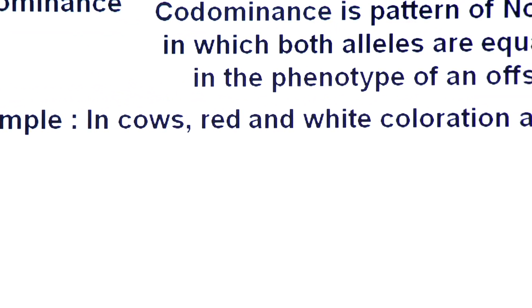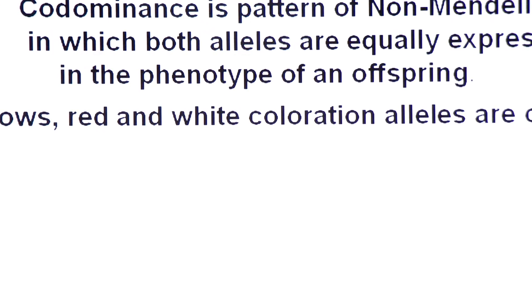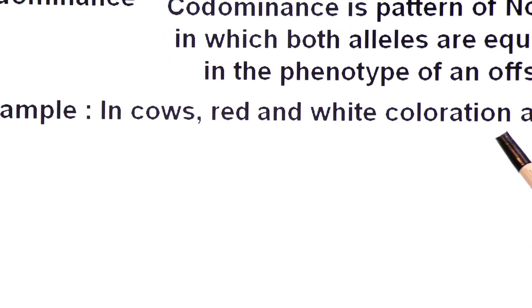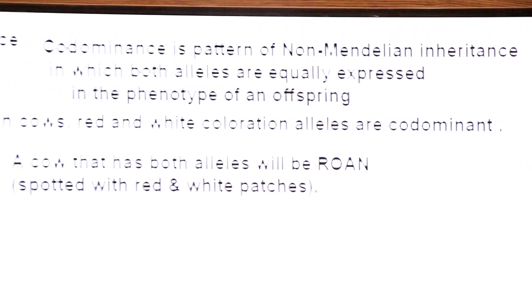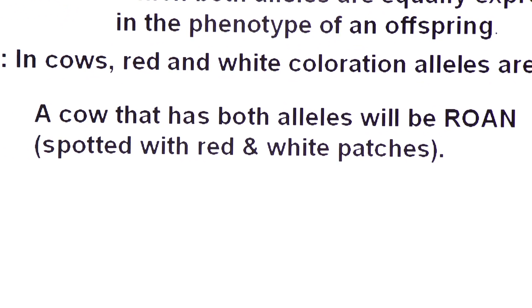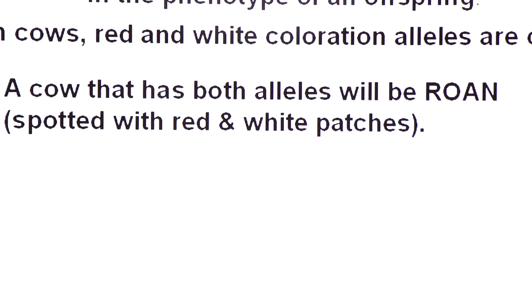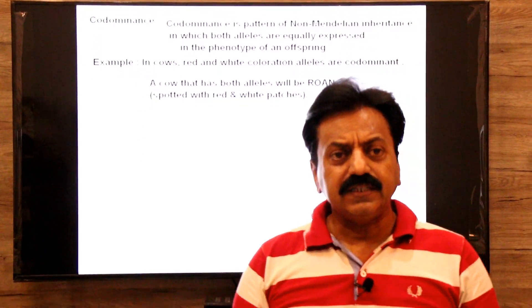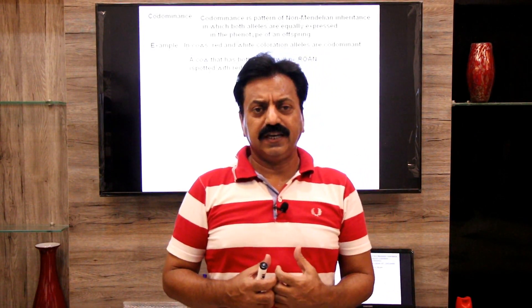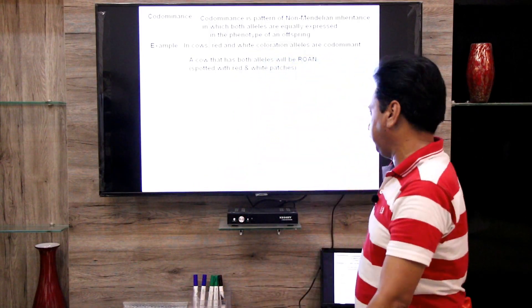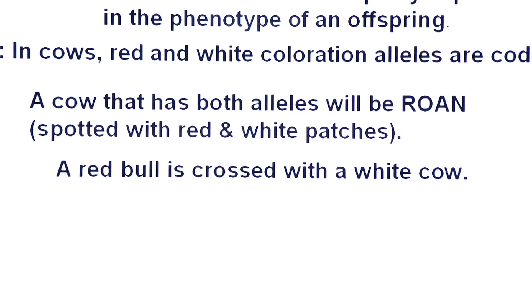Example: in cows, the red and white coloration alleles are co-dominant. A cow that has both alleles will be roan — spotted with red and white patches. जब एक red bull को white cow के साथ cross करवाया जाता है तो F1 में roan cow produce होती है। Roan ऐसी cow को कहा जाता है जिसके skin पे white patches अलग नज़र आएंगे और red patches अलग नज़र आएंगे।